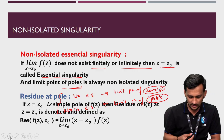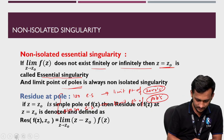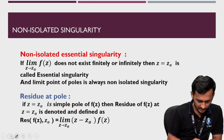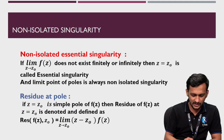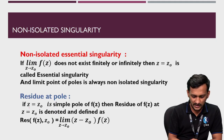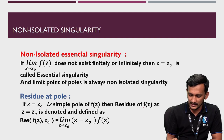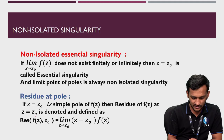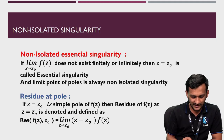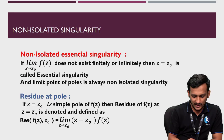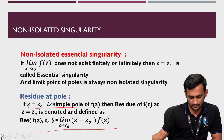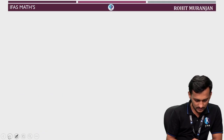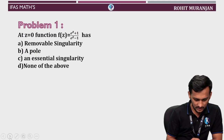Now let's talk about what residue is. The residue at a particular pole is found by this formula. If z = z₀ is a simple pole of f(z), then the residue of f(z) at z₀ is denoted and defined accordingly. So this is how we define residue when we have a simple pole.